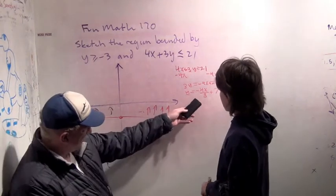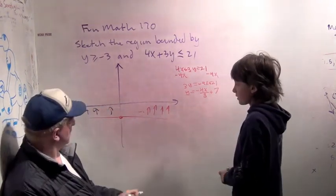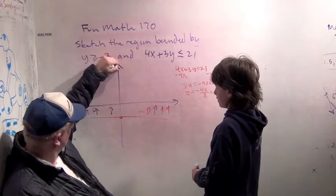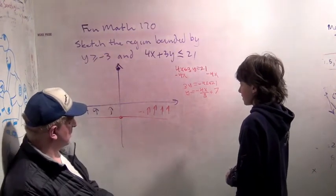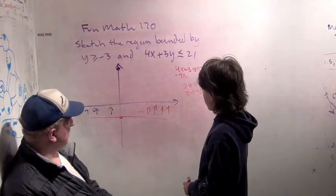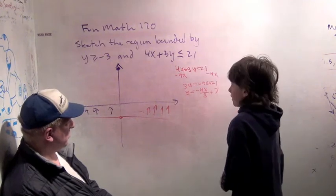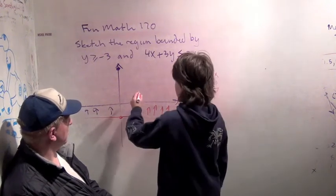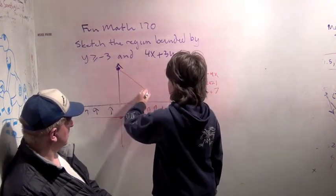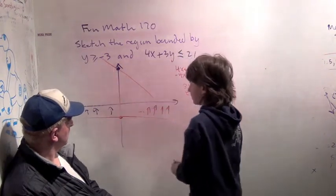So how does that help us understand what this line is? The y-intercept is 7. So let's say that's up here. The slope is negative 4 thirds. So why don't you just approximately do something where the slope is -4 thirds. It's going to be a little bit steeper than 1. Something like that.